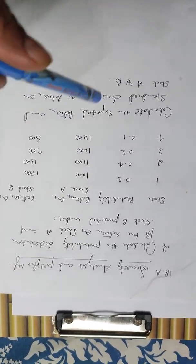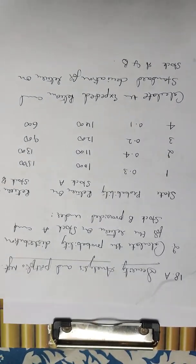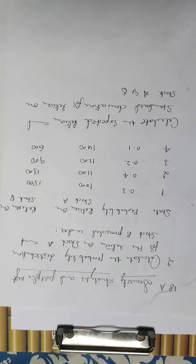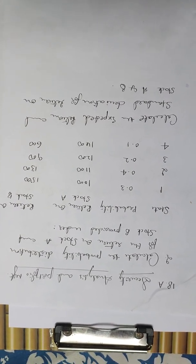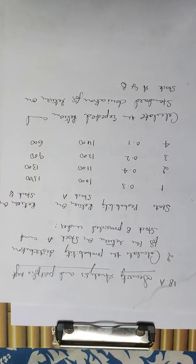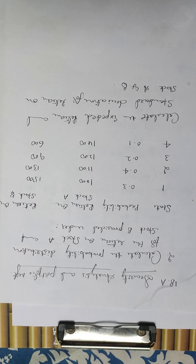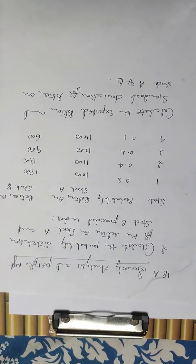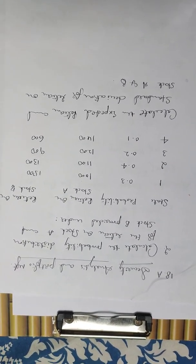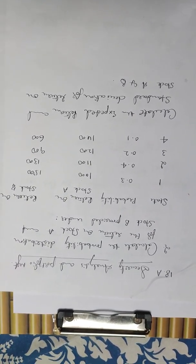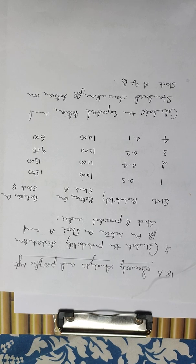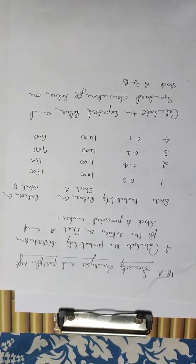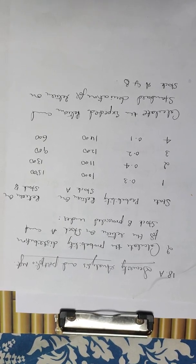Hello friends. This is KSUI MBA 3rd semester, Security Analysis and Portfolio Management. The assignment problem is to calculate the probability distribution for the return on stock A and stock B as provided.